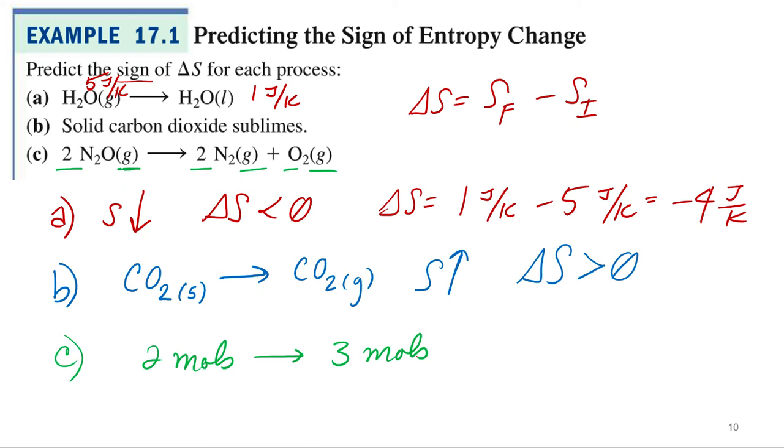All right, so what is our sign of our entropy if it's going up from two moles to three moles? Positive? Positive, yep.